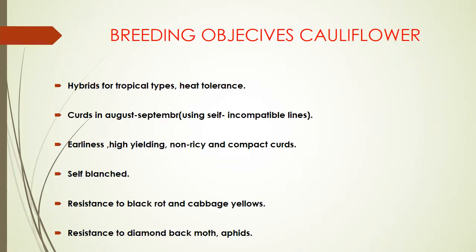Hybrids for tropical types: heat tolerance, curds in August to September. For cauliflower using self-incompatible lines: earliness, high yielding, non-ricey and compact curds, self-blanched, resistant to black rot and cabbage yellows, and resistant to diamondback moth and aphids.